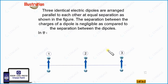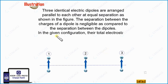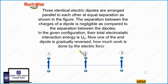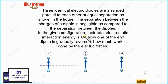In the next part of the question, we are given that in the given configuration — when all three dipole moment vectors are parallel to each other — the total electrostatic interaction energy is U0. That means at this configuration, the total energy is U0.